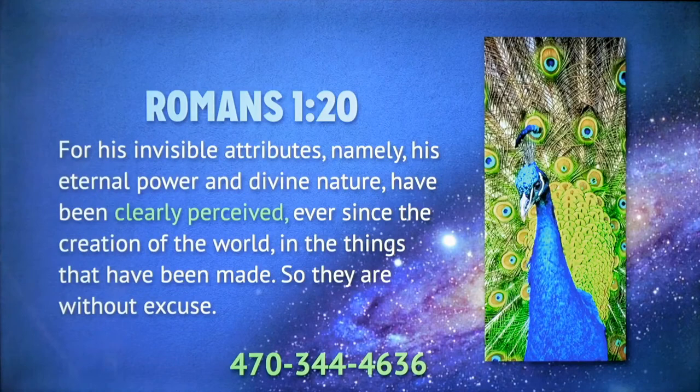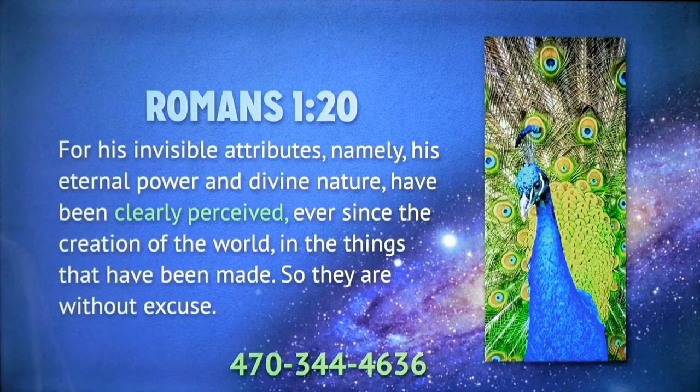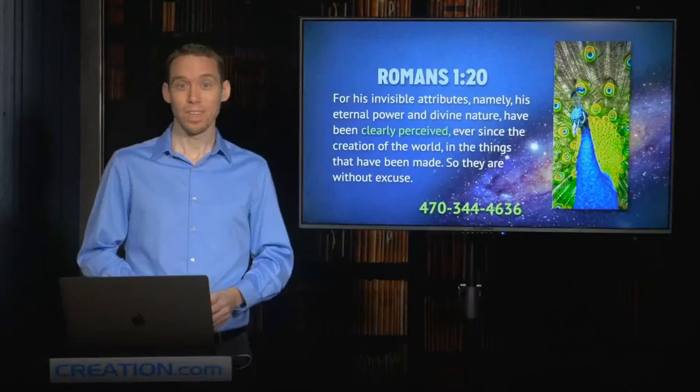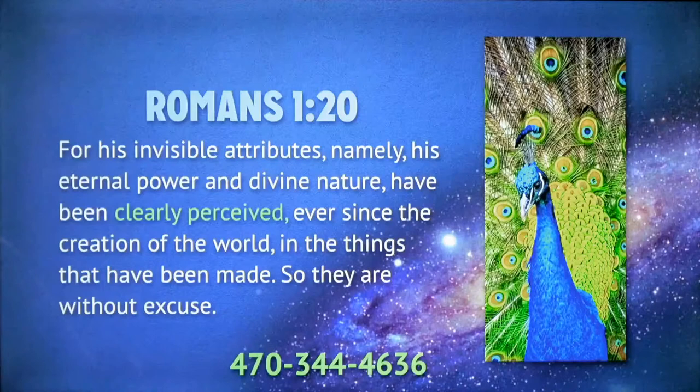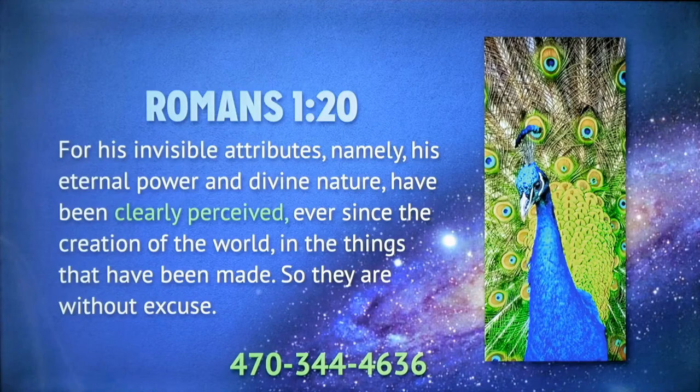In Romans chapter 1 verse 20, speaking here of God, the Apostle Paul writes that his invisible attributes, namely his eternal power and his divine nature have been clearly perceived. In other words, this verse is saying that the evidence for God is overwhelming. Everybody really knows that he exists and that he is the creator. And how do we know that? It says ever since the creation of the world, this has been apparent in the things that have been made.